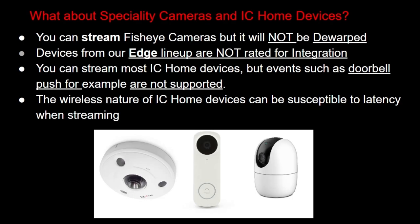The last thing to talk about are the specialty cameras. These typically include fisheye cameras and the IC Home line. While fisheye cameras are not officially supported, you are able to stream over the network, but it will not be dewarped. Regarding our IC Home devices, they can be streamed over the network, but events such as a doorbell push from the Dinger Pro, for example, are not supported. Also, the wireless nature of IC Home devices can be susceptible to latency when streaming. Lastly, the devices from our Edge lineup are not rated for integration.